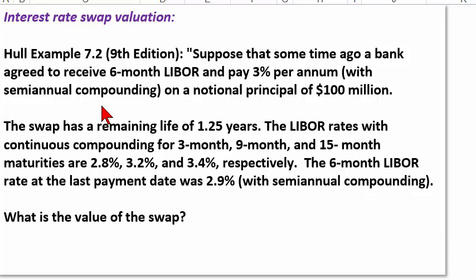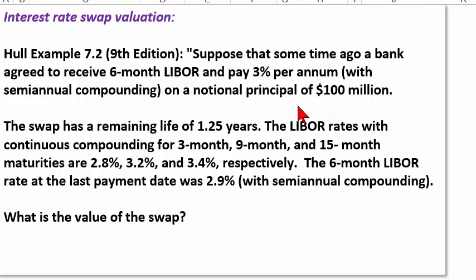Hello, this is David with Interest Rate Swap Valuation, a challenging exercise in finance. Let's try and make it less painful. Using John Hull's example 7.2 from the 9th edition, here's the word problem. Suppose that some time ago a bank agreed to receive 6-month LIBOR and pay 3% per annum on a notional principal of $100 million. That's the essential swap.